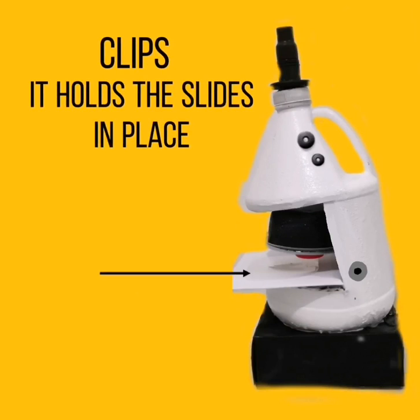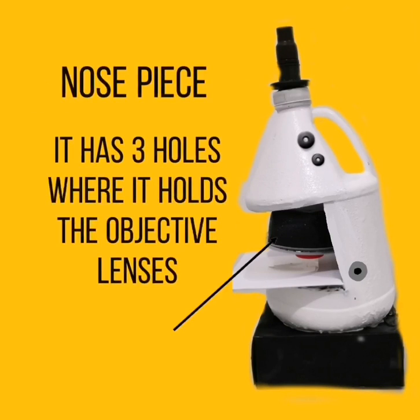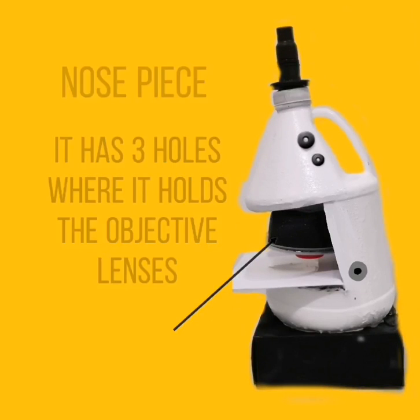Clips — it holds the slides in place. Nose piece — it has three holes where it holds the objective lenses.